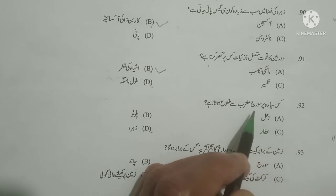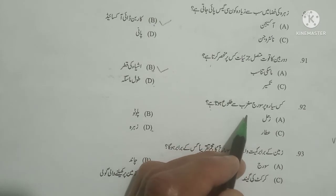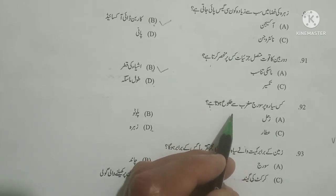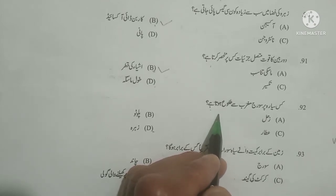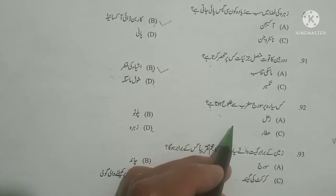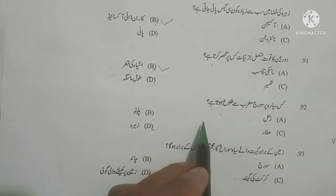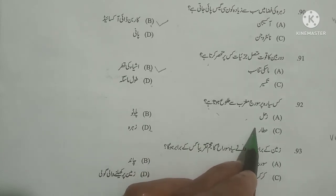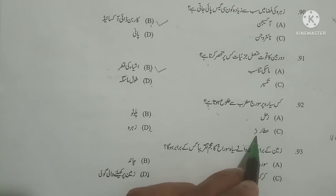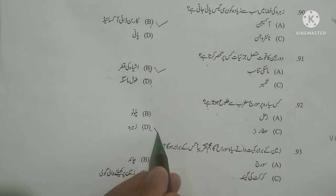Next question: Kis sayara par suraj maghrib se tulu hota hai? On which planet does the sun rise from the west? As you know, on Venus the sun rises from the west. Options given: zehal means Saturn, Pluto, atarad means Mercury, zahra means Venus — Venus is the correct option.